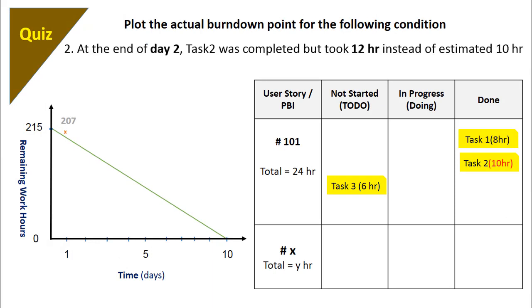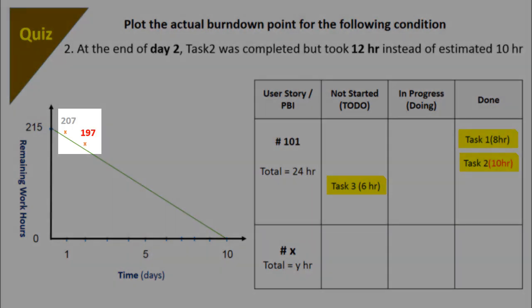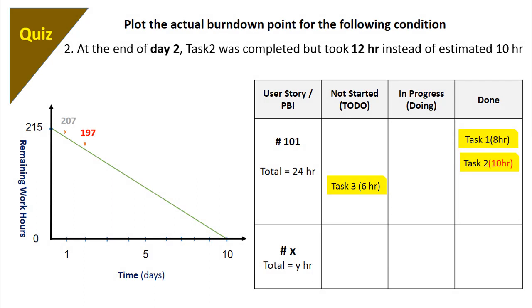Now, if at the end of day two, task two was completed but took 12 hours instead of 10 hours, plot the actual burndown point. We need to remember that the burndown chart is all about plotting the remaining work hours. So even if the completed task took more than the estimated hours, this is not going to affect the remaining work hours in any way. So the remaining work hours will be 207 minus 10 equals 197. If you remember, we have kept some contingency buffer. This extra time will be absorbed here. Some additional time may get added to the buffer if any task finishes early.